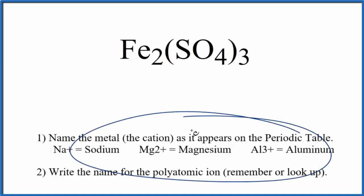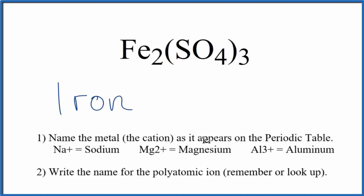We can use these rules here to write the name for Fe₂(SO₄)₃. So first, let's write the name for the metal, Fe. That's just iron. And then we write the name for the polyatomic ion. SO₄, we said that's the sulfate ion. Lowercase s, and so far we have the name iron sulfate for Fe₂(SO₄)₃.